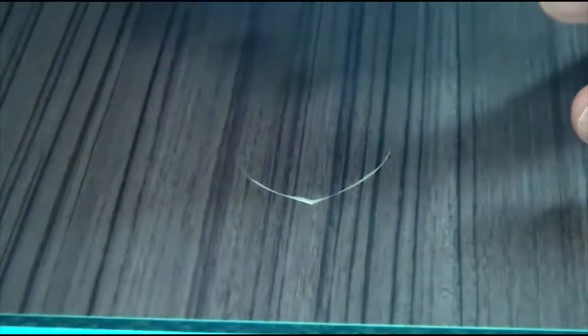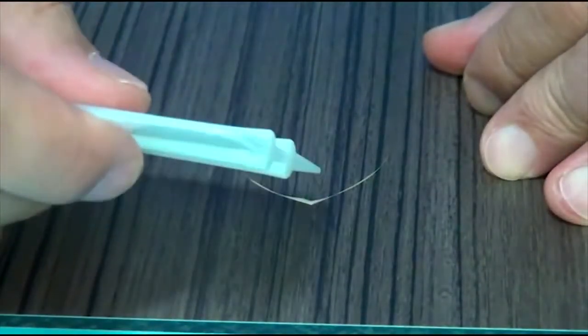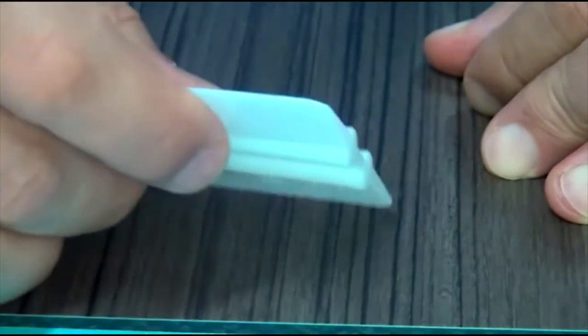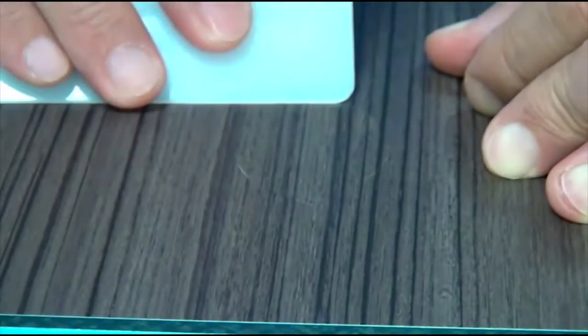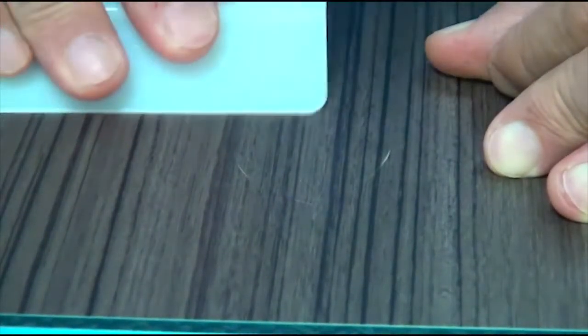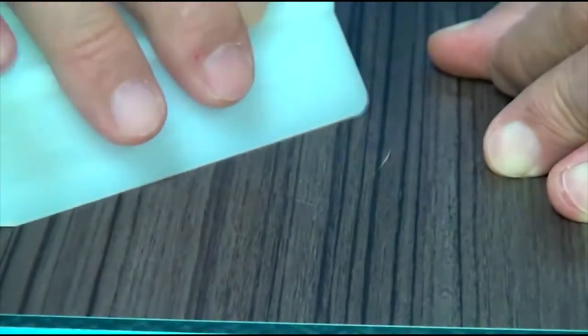Use the edge of a nick-free squeegee to gently push together the edges of the original film and the repair piece. Go over the entire repair piece with a squeegee. Rub a finger over the edge of the repair piece to be sure the film pieces meet smoothly, and re-squeegee as needed.